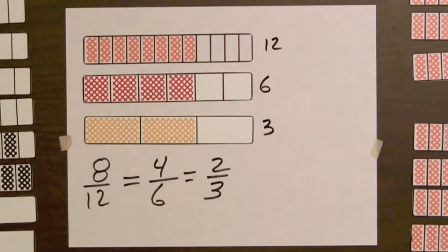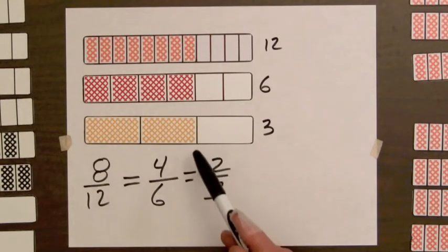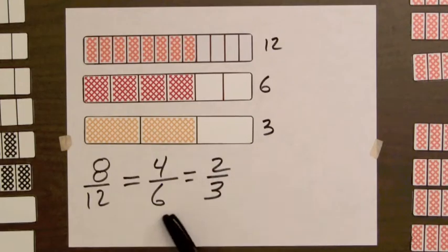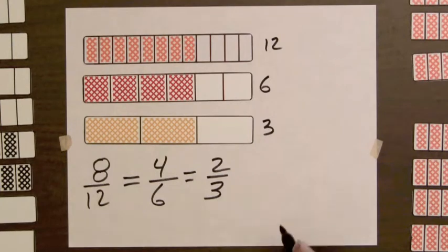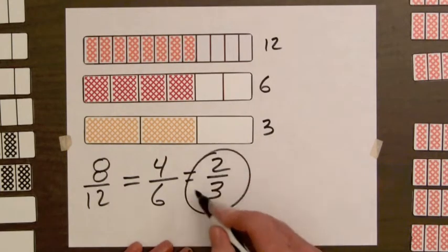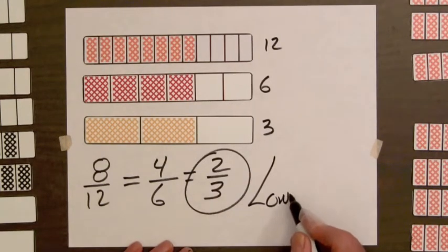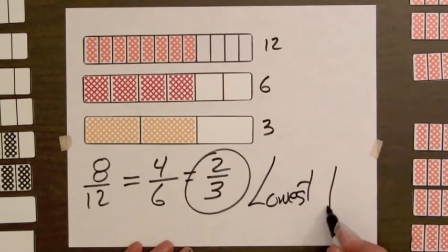Notice that there is no bar with fewer than three parts that has the same amount of shading as these bars. For these fractions, we can say the two-thirds bar has the smallest number, or lowest number, of parts. So we say two-thirds is in lowest terms.